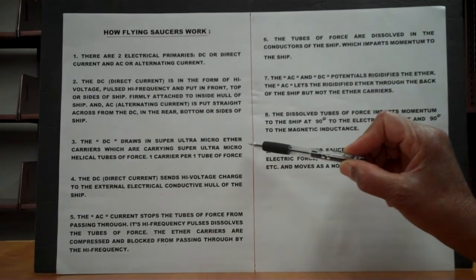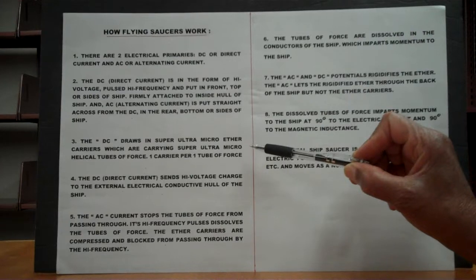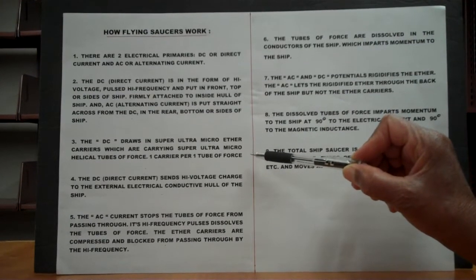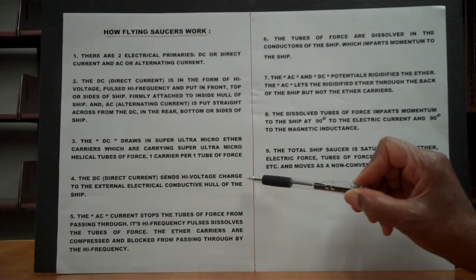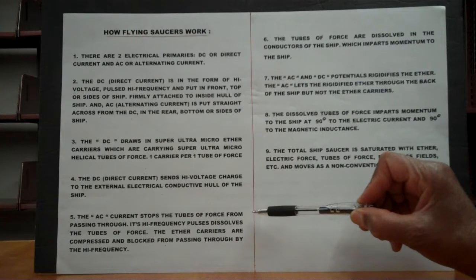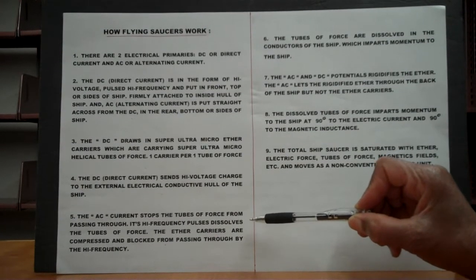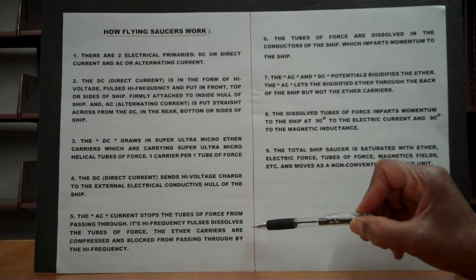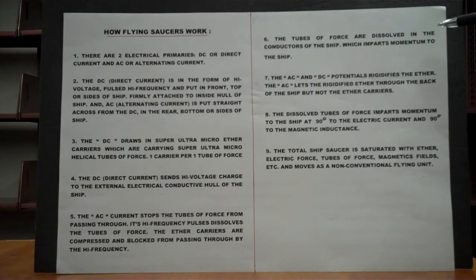Number three: the DC draws in super-ultra micro-ether carriers, which are carrying super-ultra micro-helical tubes of force — one carrier per one tube of force. Number four: the direct current DC sends high voltage charge to the external electrical conductive hull of the ship. Number five: the AC current stops the tubes of force from passing through. Its high-frequency pulses dissolve the tubes of force. The ether carriers are compressed and blocked from passing through by the high frequency. Number six: the tubes of force are dissolved in the conductors of the ship, which imparts momentum to the ship.